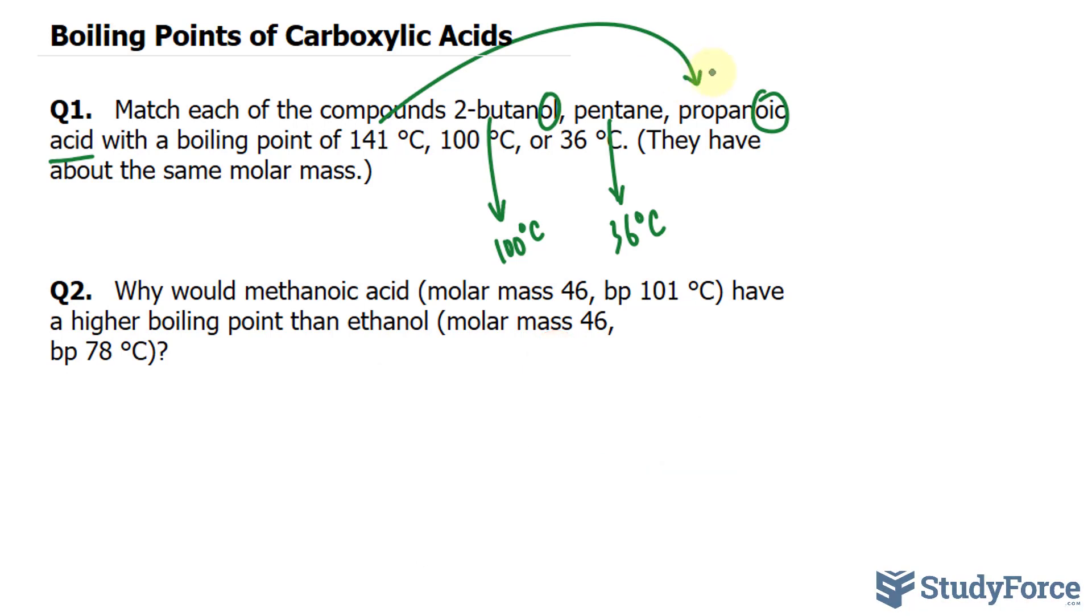In question 2, why would methanoic acid have a higher boiling point than ethanol? Ethanol is an alcohol. That's a carboxylic acid. Now, as I mentioned earlier, you should expect that carboxylic acids have higher boiling points than ethanol.